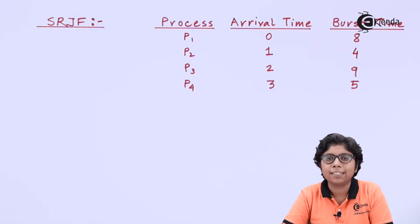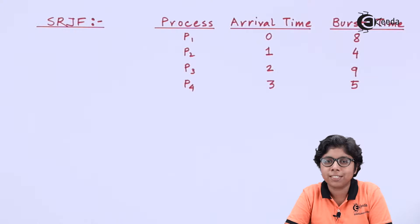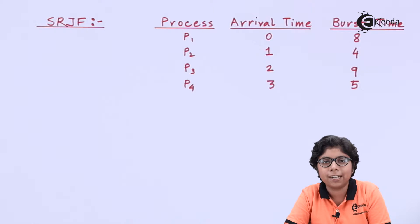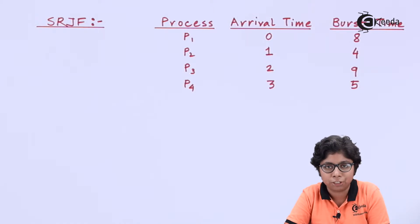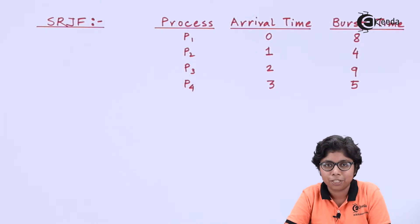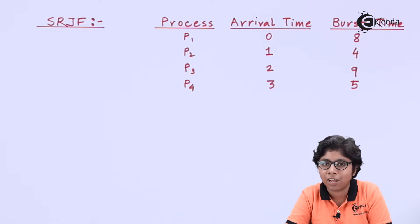Here we will compare the remaining job time of a process with the SJF algorithm that we have already calculated. If the remaining job time of the current process is higher than the new process, the new process is allocated and the arrival time is calculated accordingly. First we will calculate the average waiting time of the SRJF algorithm and then discuss its advantages and disadvantages.